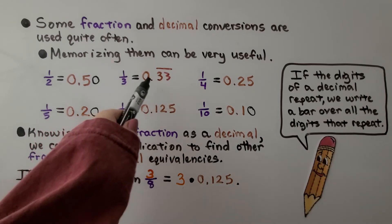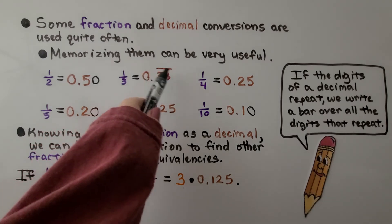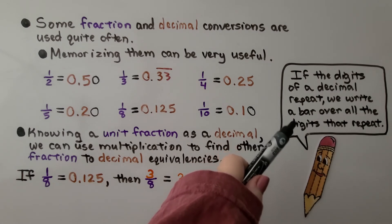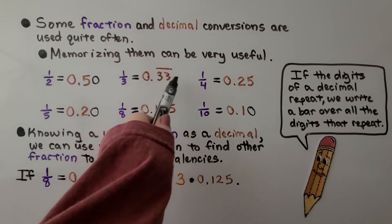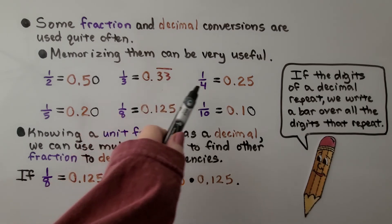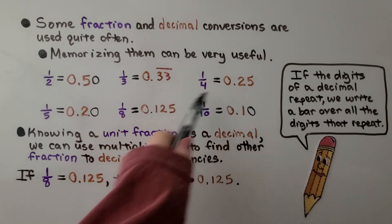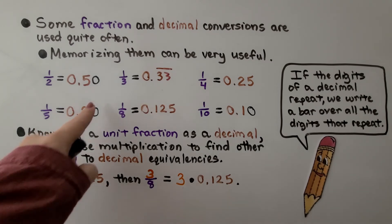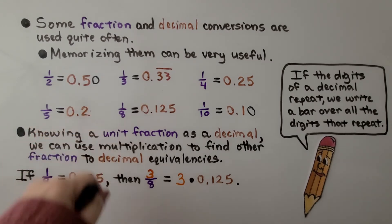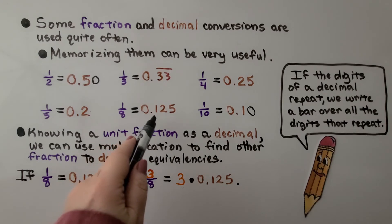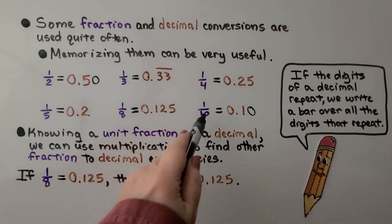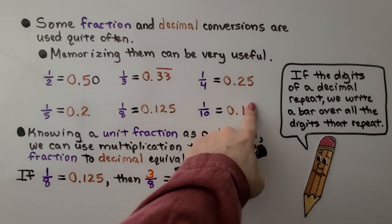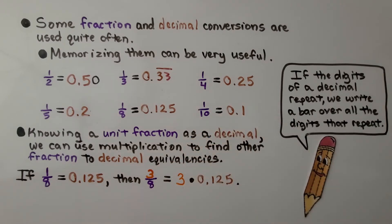One-third is 0.33 with a bar over the top. If the digits of a decimal repeat, we write a bar over the digits that repeat. This three keeps repeating. One-fourth is 0.25. One-fifth could be 0.20 or 0.2. One-eighth is 0.125. And one-tenth can be written as 0.10 or 0.1.